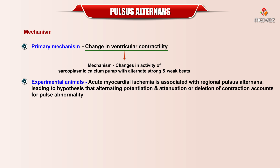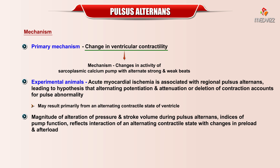In experimental animals, acute myocardial ischemia is associated with regional pulsus alternans, leading to the hypothesis that alternating potentiation and attenuation or deletion of contraction accounts for the pulse abnormality. Thus pulsus alternans may result primarily from an alternating contractile state of the ventricle. The magnitude of the alteration of pressure and stroke volume during pulsus alternans, as indices of pump function, reflects the interaction of an alternating contractile state with changes in preload and afterload.